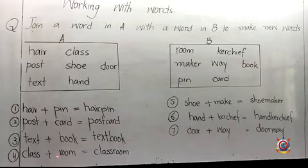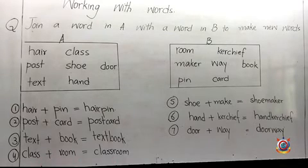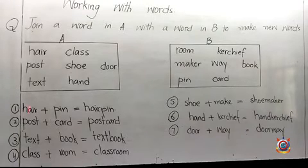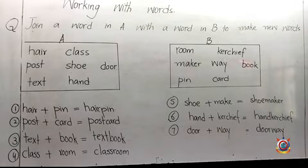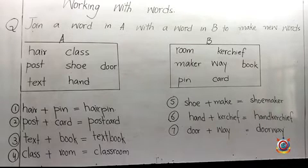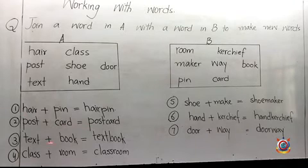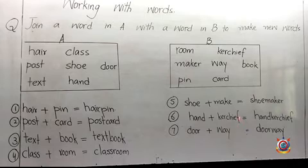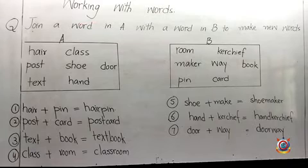After the first four words, write number five: shoe plus maker equals shoemaker. Then hand plus kerchief equals handkerchief. Then door plus way equals doorway. Write all the words on one side of the page.